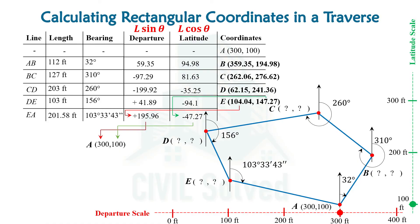Now with this we can conclude that in a closed traverse, when we are doing the calculation for the coordinates of the respective points, whatever distance we move in the rightward direction for the departure scale, we will be moving by the same distance in the leftward direction. The same is the case for the latitude scale — whatever distance we are moving upward, the same distance we are moving downward.